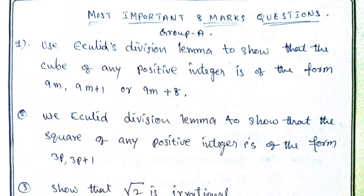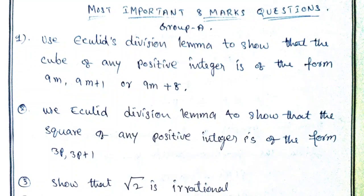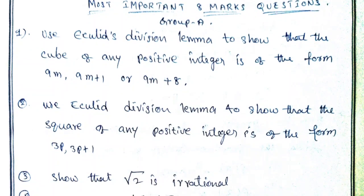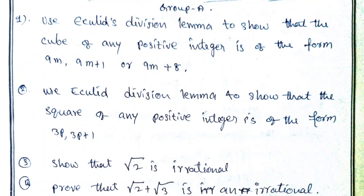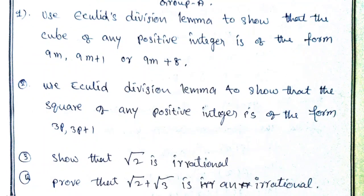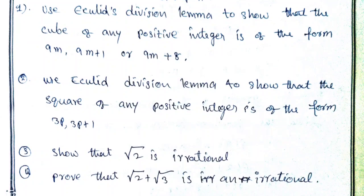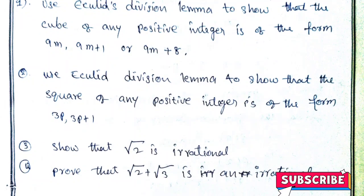First questions you have real numbers. Either first question you have Euclid's division lemma with a question compulsory. One or two questions you have missed.